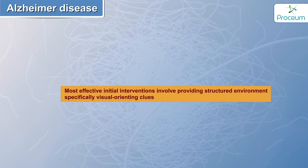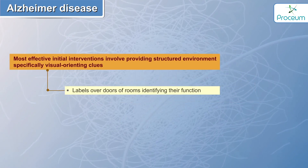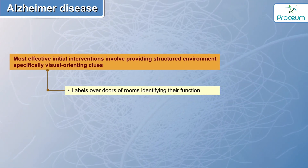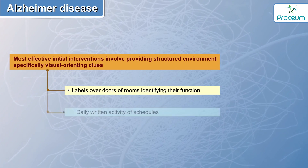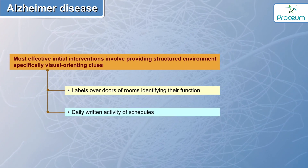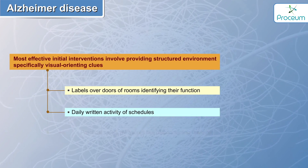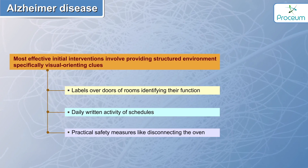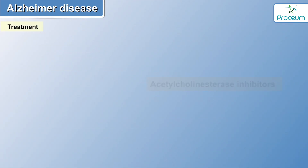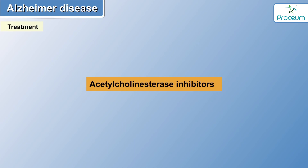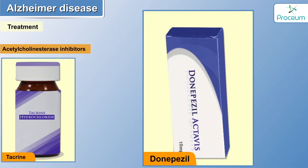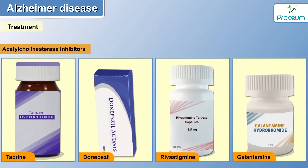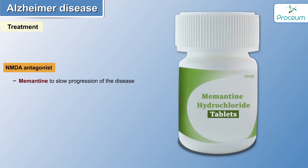The most effective initial interventions involve providing a structured environment, specifically visual orienting clues like labeling over the doors of rooms identifying their function, some sort of daily written activity schedules, and educating practical safety measures like disconnecting the oven. Medical management involves the use of acetylcholinesterase inhibitors like tacrine, donepezil, rivastigmine, and galantamine. Also, NMDA antagonists like memantine can be used to slow the progression of the disease.